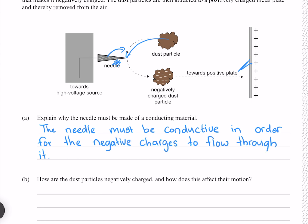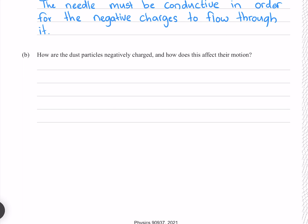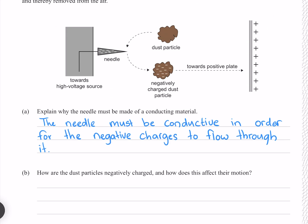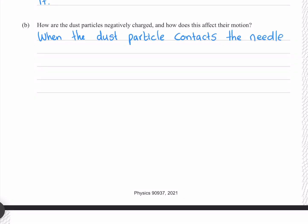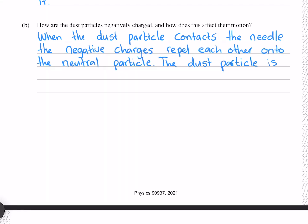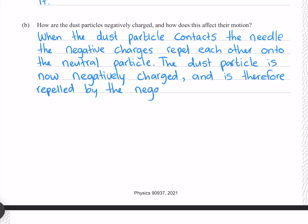How are the dust particles negatively charged and how does this affect their motion? Our dust particle comes in contact with our needle. Considering the negative charge on the needle, that negative charge experiences a repulsion onto the dust particle. Since our dust particle is now negatively charged, it experiences a repulsion from the needle and an attraction from the positive plate, making it accelerate towards the right. When the dust particle contacts the needle, the negative charges repel each other onto the neutral particle, making it negatively charged and therefore attracted to the positive plate.